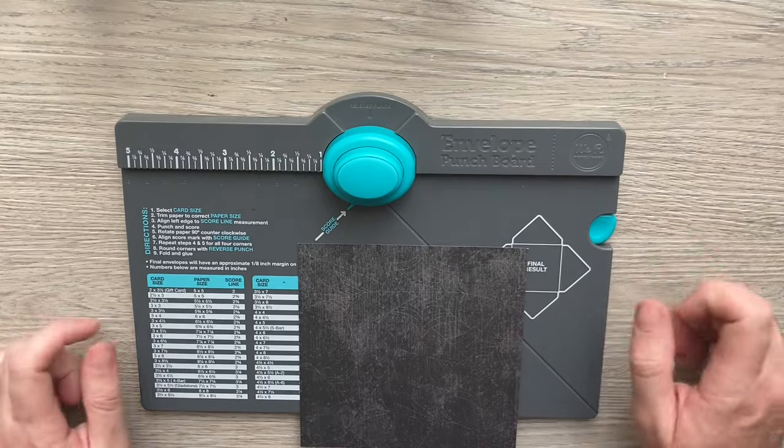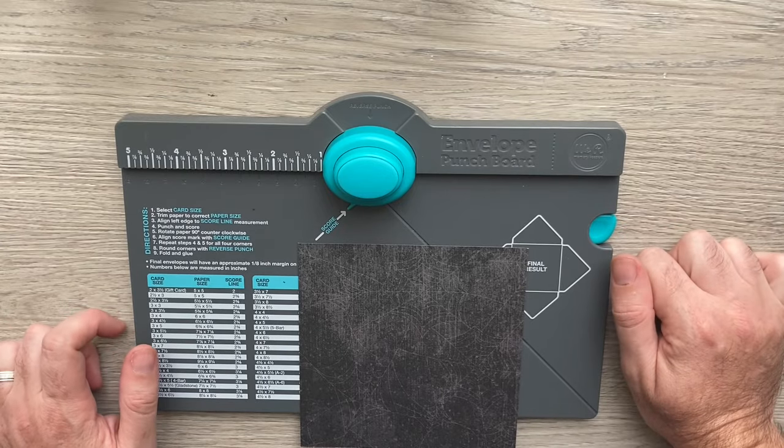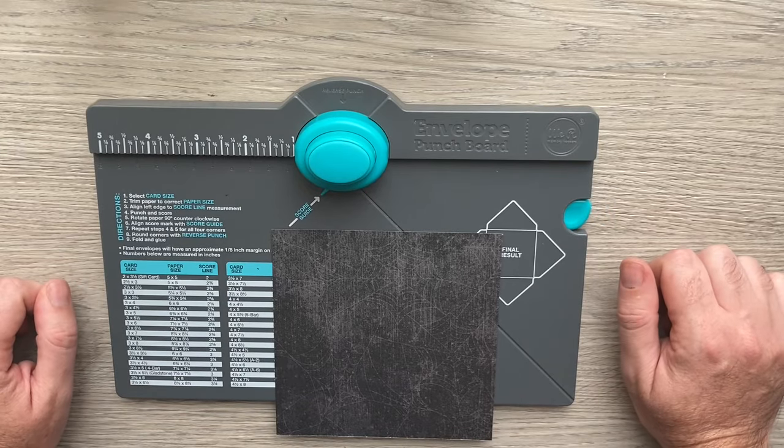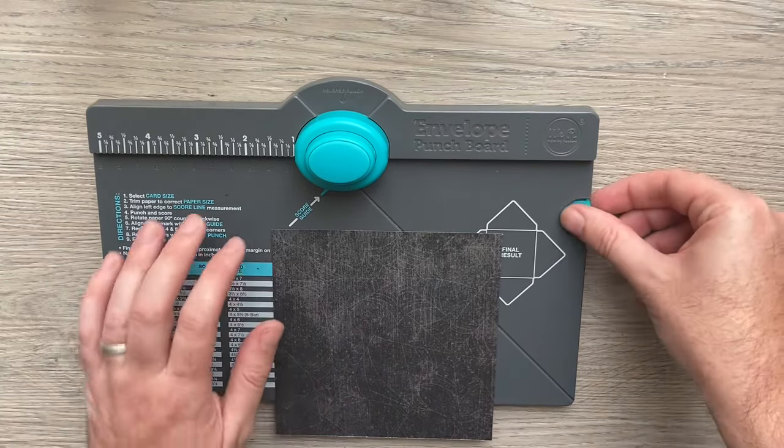If you want to see any of the other treats, if you have a look in the description below, you'll find some links. But today, I'm going to be showing you how to use the envelope punch board to make that little mini box.